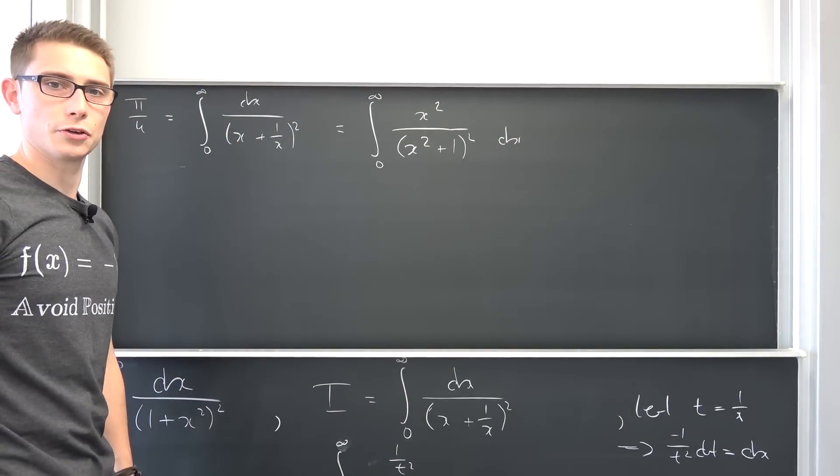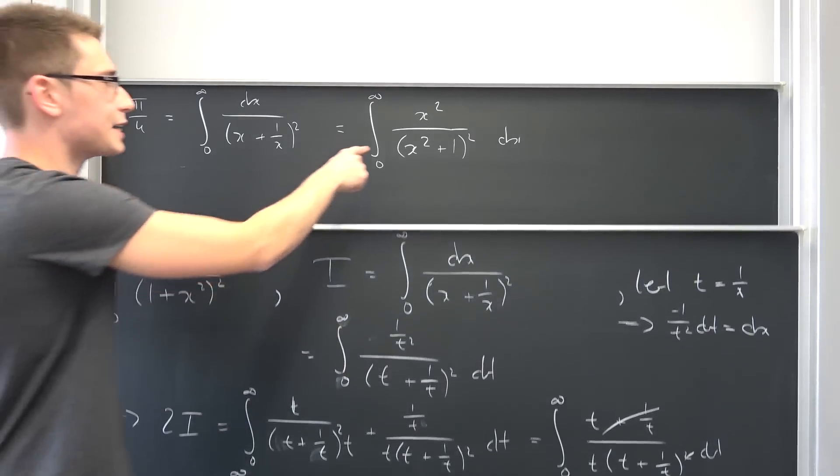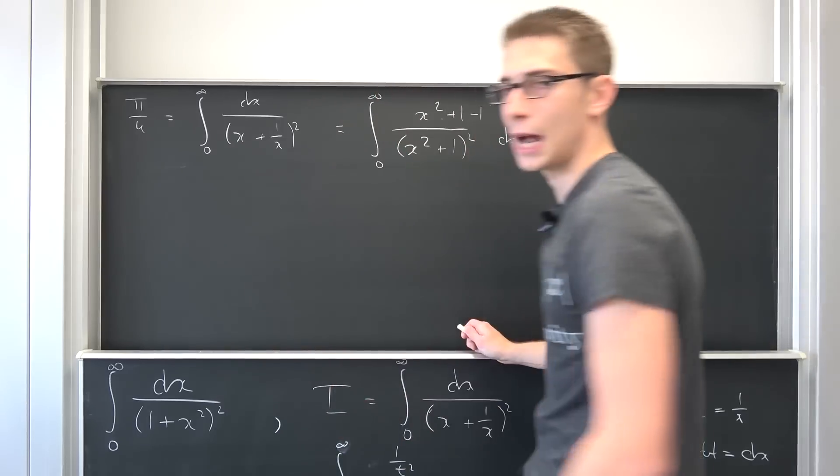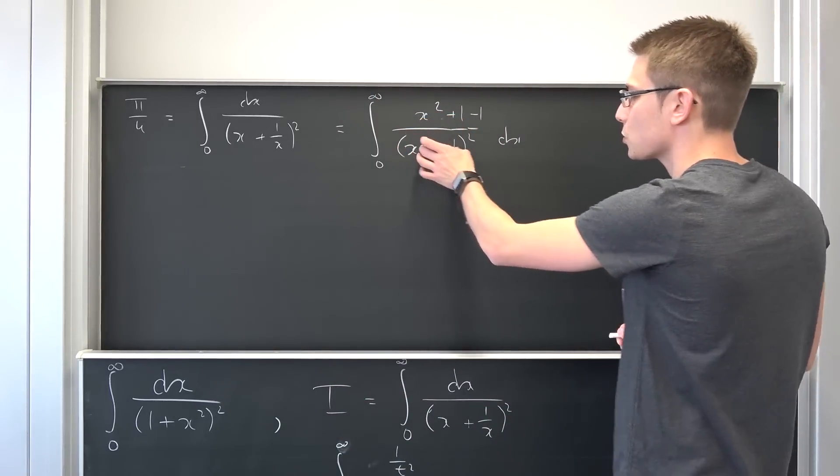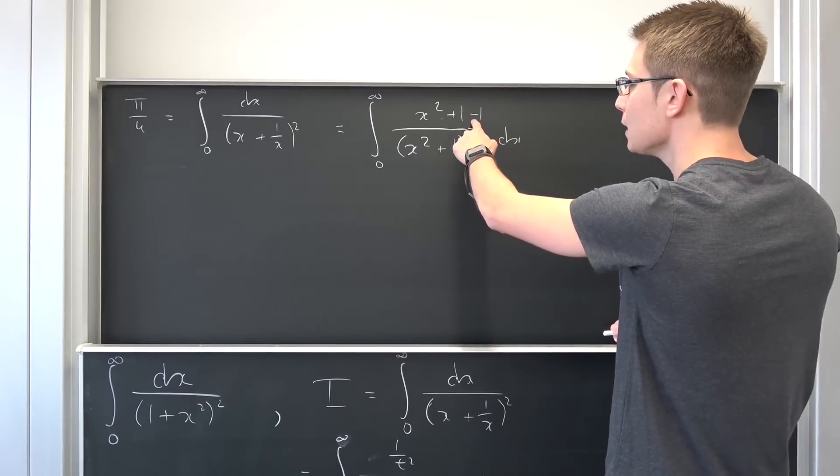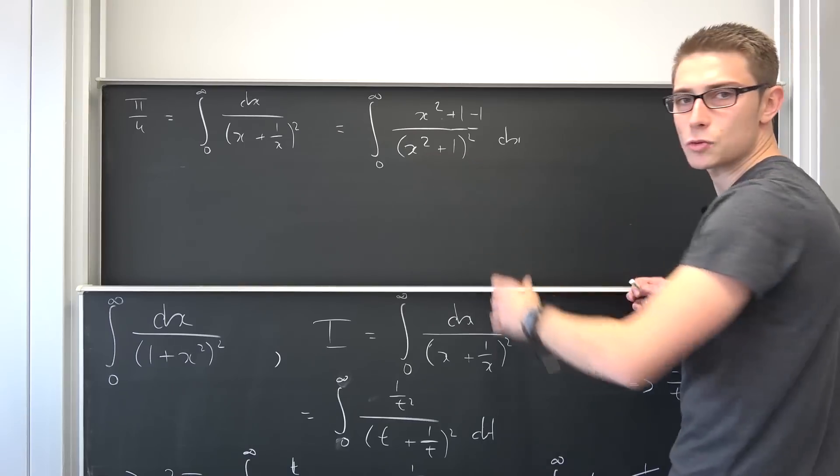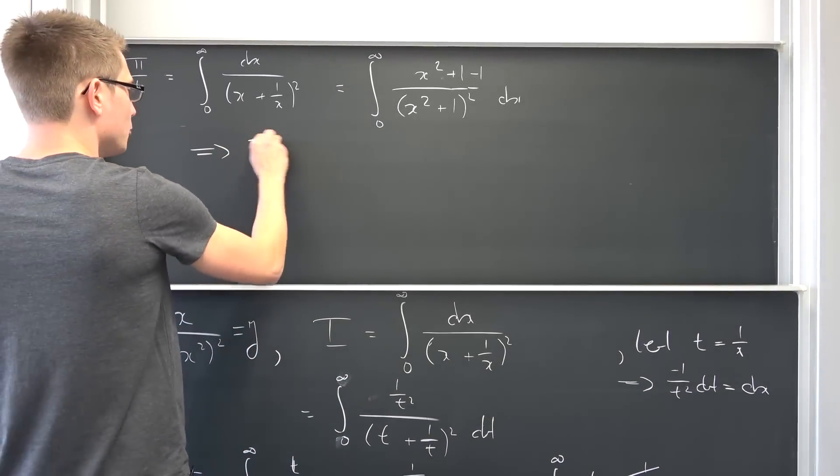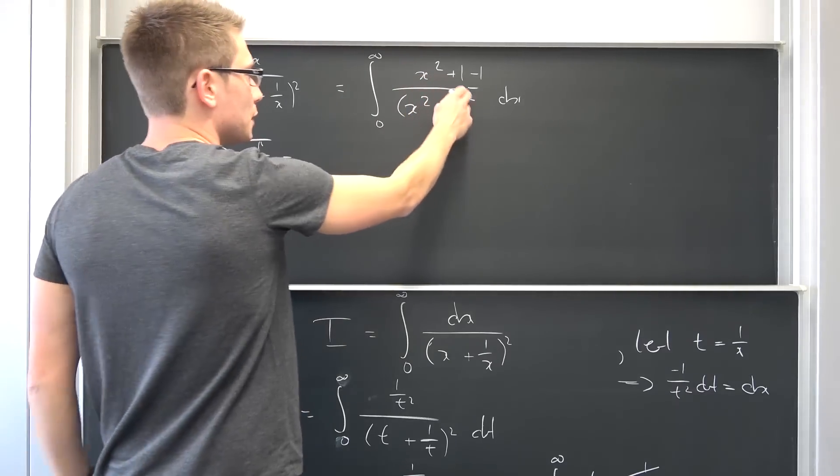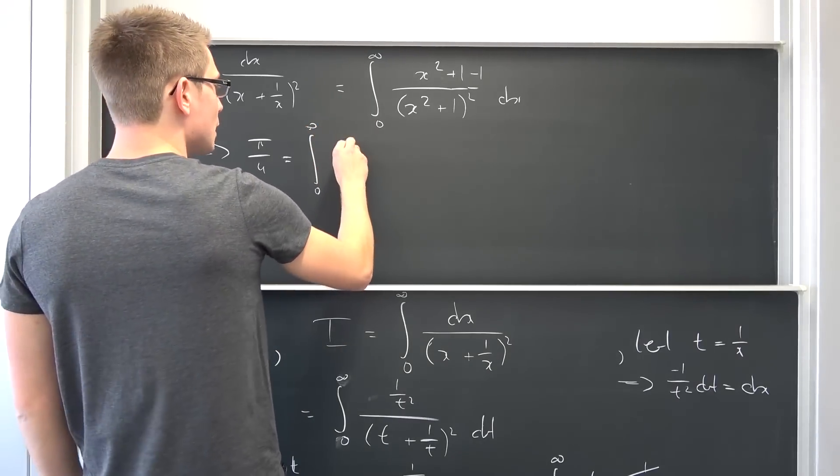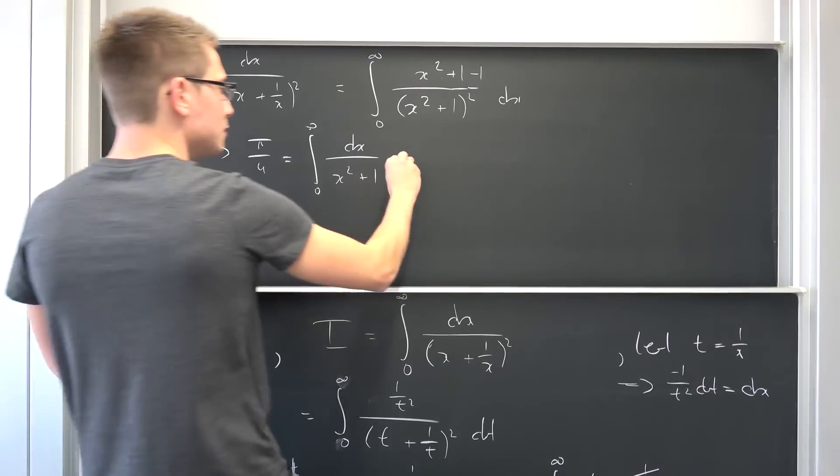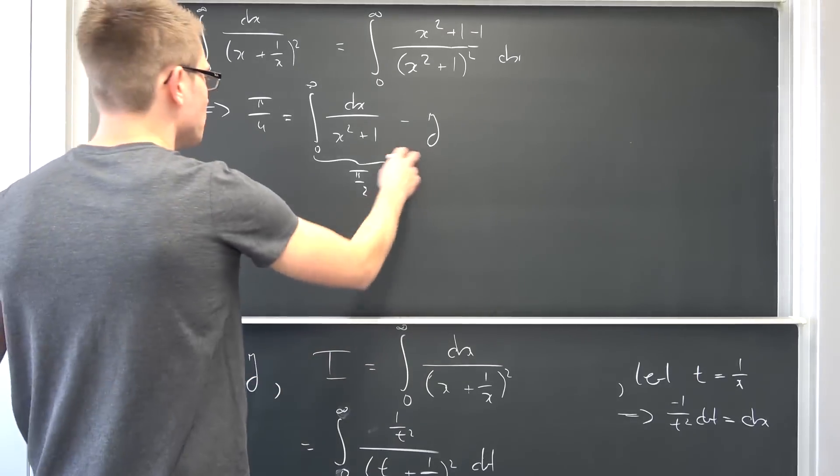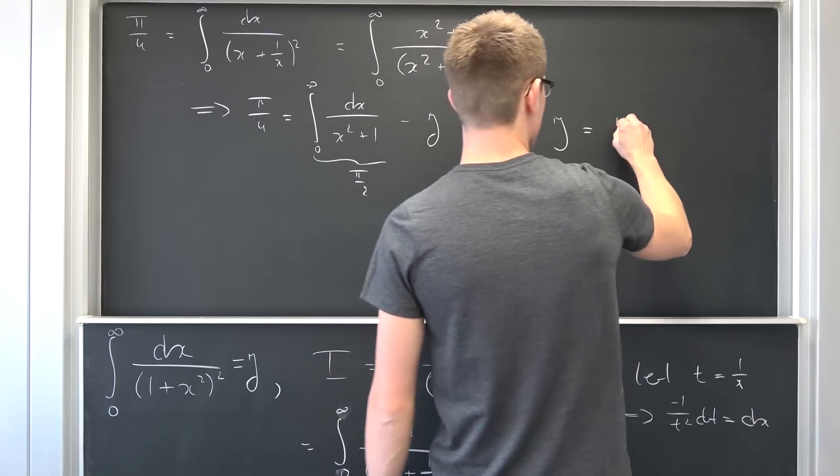And now, this is pretty good. This kind of looks like this integral just with an x² up here. How are we going to get rid of the x²? Well, obviously, by adding a 0, which is nothing but 1 minus 1. Because now we can break this up into (x² + 1)/(x² + 1)² minus 1/(x² + 1)². The first factor is going to cancel out, just like we did before. And then minus this integral, which is j. Meaning π/4 is the integral from 0 to infinity of dx/(x² + 1) minus j. This thing we have just evaluated, it's π over 2, the inverse tangent. We can add j on both sides and subtract π/4 on both sides. Meaning overall, j is going to evaluate to π over 4 yet again.